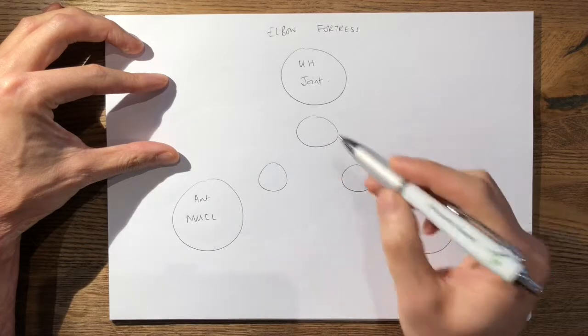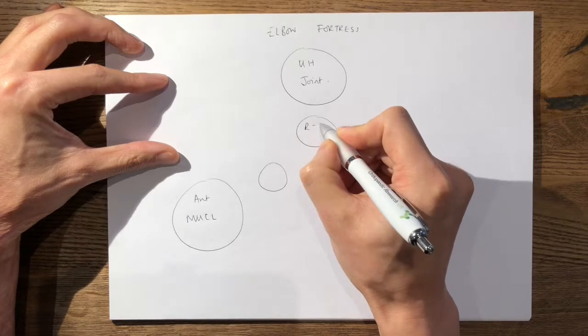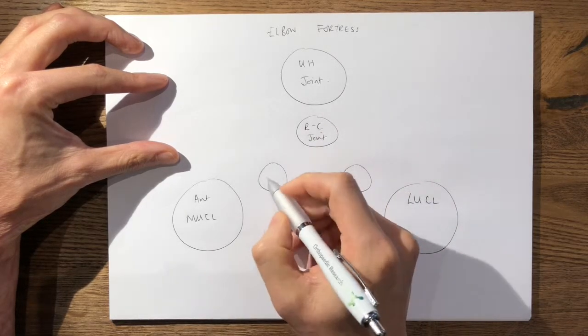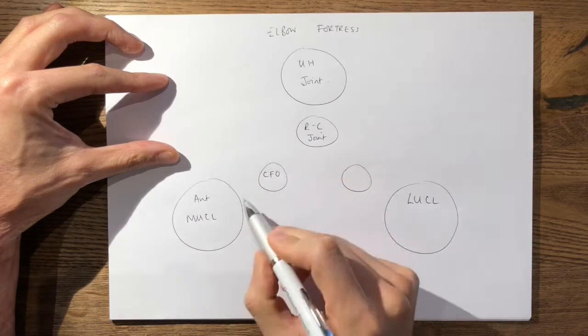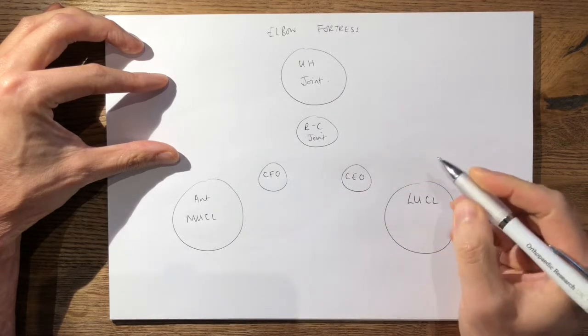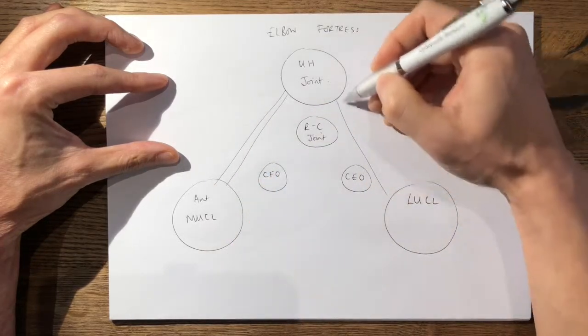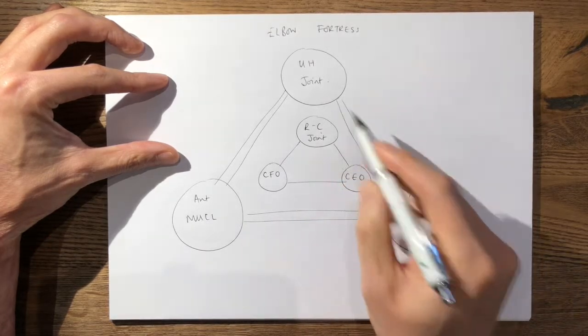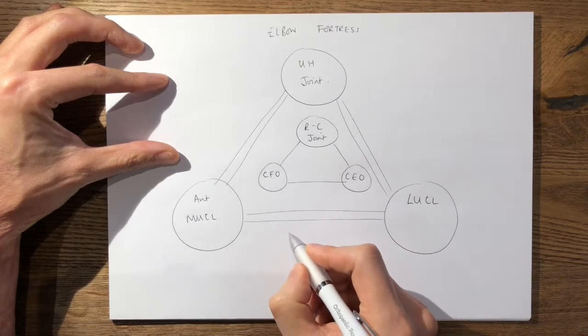Within the secondary stabilizers, or within the fortress, you have your radiocapitella articulation. Over here, on the medial side, you have your common flexor origin, or your flexor pronator mass, and over here you have your common extensor origin. And you can kind of join up the walls of your fortress like this, and the walls joining up represents your elbow capsule.